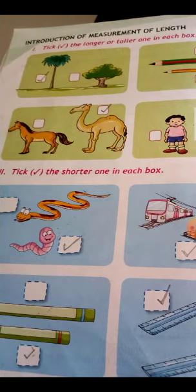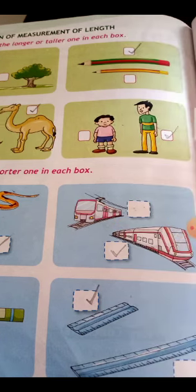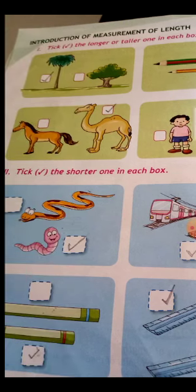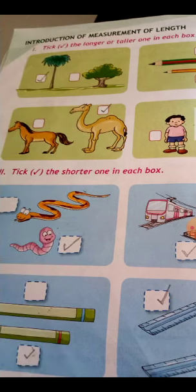Next picture, two pictures are given. First, a horse picture, and one camel picture. The camel's height is bigger than the horse, put a tick on the camel. Next, two pictures of one small boy and one man. The man's height is bigger, tick the shorter one. In each box, the shorter one.